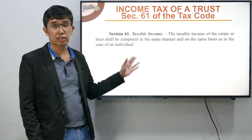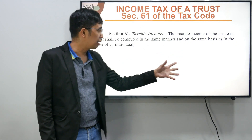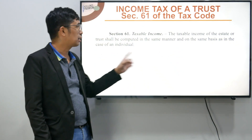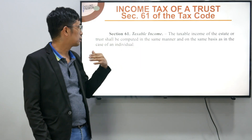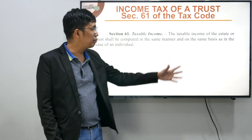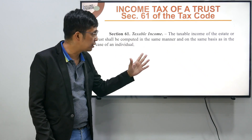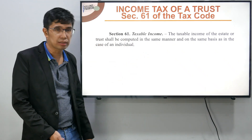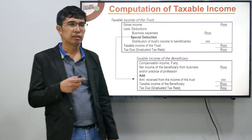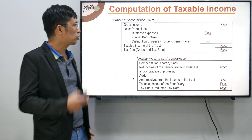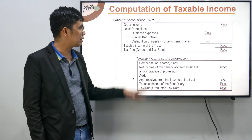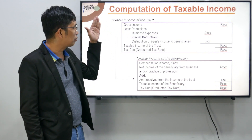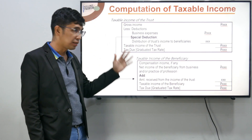Sabi ng Section 61: the taxable income of the estate or trust — kaya pareho, estate at trust — shall be computed in the same manner and on the same basis as in the case of an individual taxpayer. Pansinin itong formula natin: pinagdikit natin yung computation ng taxable income ng trust saka beneficiary.